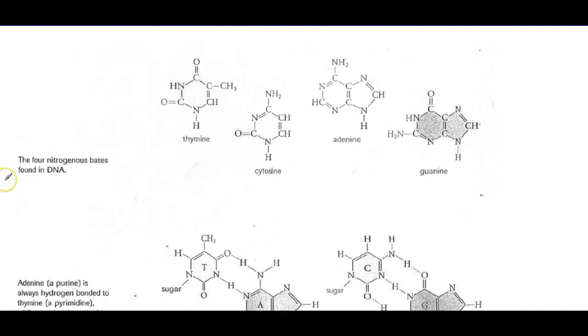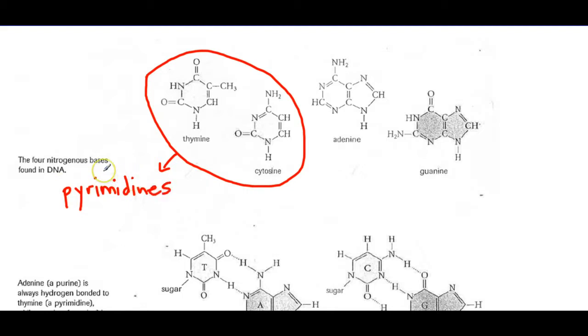If we break down the four possible nitrogenous bases that we have, I introduced these to you in the last note. But I just want to maybe highlight some things about them. If I group these two single ring structures, these are our pyrimidines. And the two that have the double ring structure are our purines.